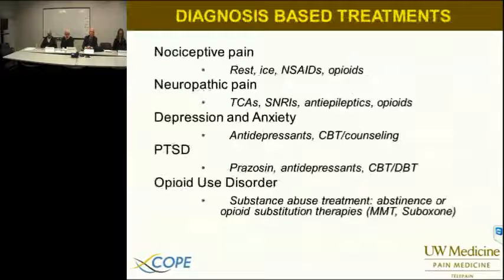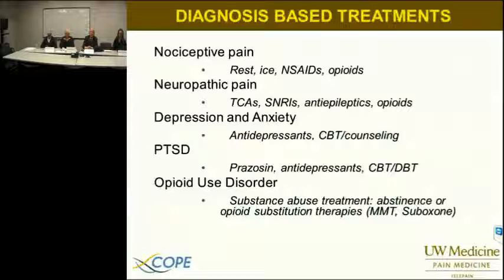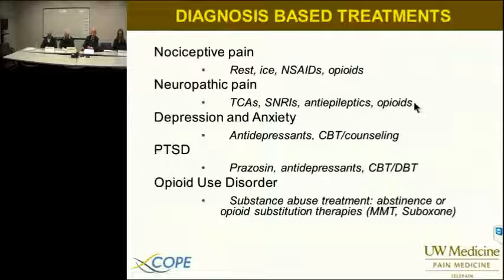In terms of making the diagnosis — is it nociceptive? Is it neuropathic? Is there depression, anxiety, or other mood-related disorder, or PTSD? Or is there active opiate use disorder present? The treatments: for nociceptive pain — short interval rest to allow tissues to heal, suture the laceration, splint the fracture, nature will heal. Ice often useful. NSAIDs — and acetaminophen should be included here as well. Opioids are appropriate for acute nociceptive pain. For neuropathic pain — tricyclic antidepressant drugs, SNRIs, anti-epileptic or anti-convulsive drug categories, and opioids. Opioids again are appropriate acutely; chronic recommendations are the first three. Opioids become more and more problematic, as we know, with chronic use.